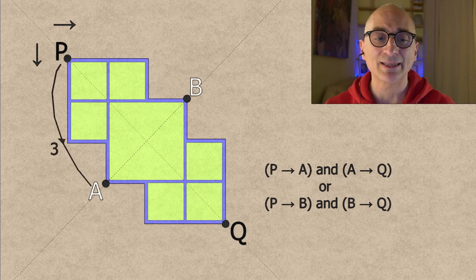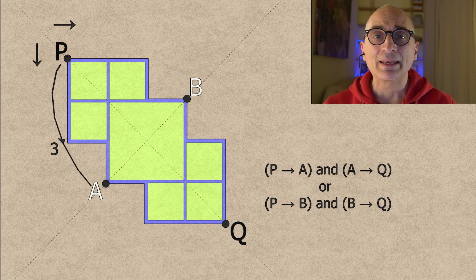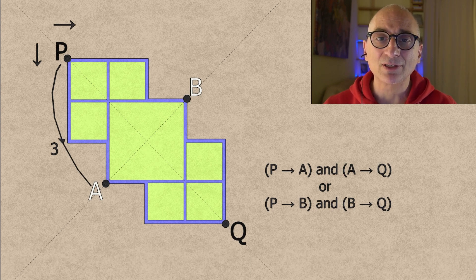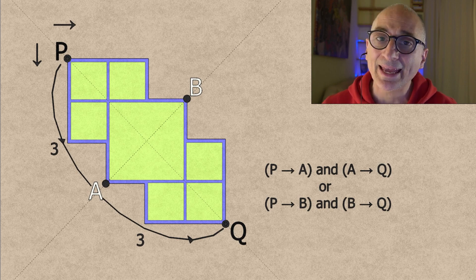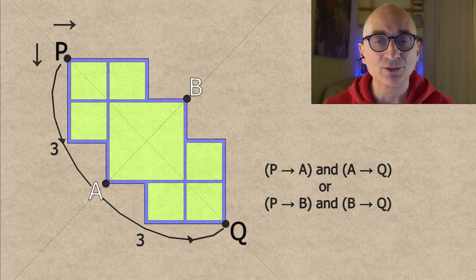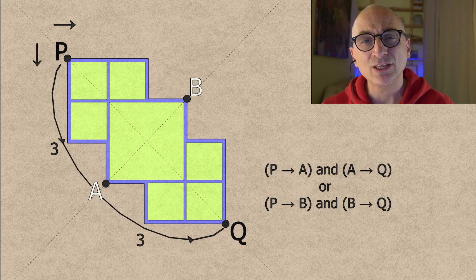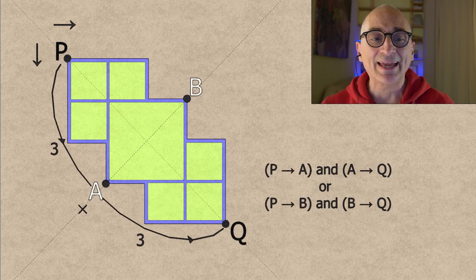So we have three paths that go from P to A. And being everything really symmetrical, we also have three paths from A to Q. And I can combine any path from P to A with any path from A to Q. So I have to multiply those numbers and I get nine paths from P to Q going through A.